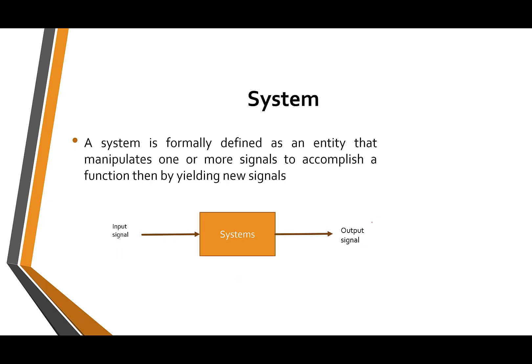Suppose we have a system. The input signal is called x and the output signal is called y. Now I will describe the system and its properties.